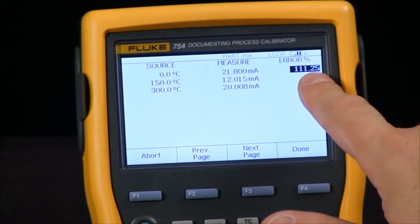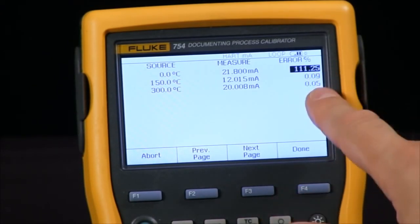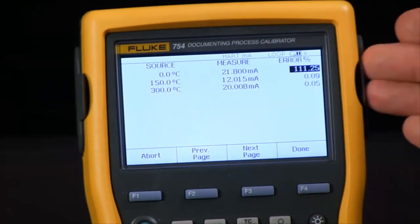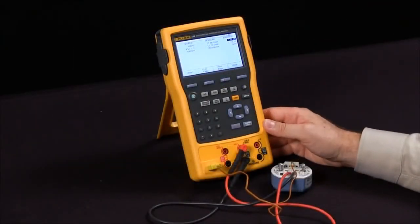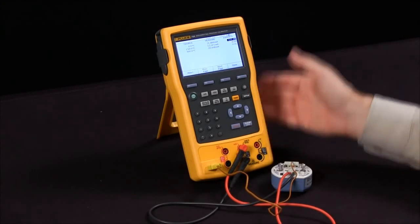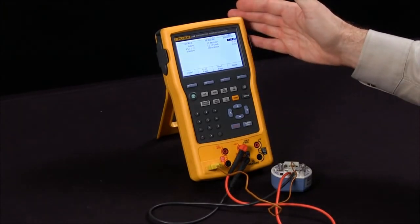So there I am, I'm out of tolerance with a negative value on the first one, and the last two are in tolerance, so those are in positive value. So this is how you communicate with the HART device and perform a calibration using the Fluke 754 documenting process calibrator.